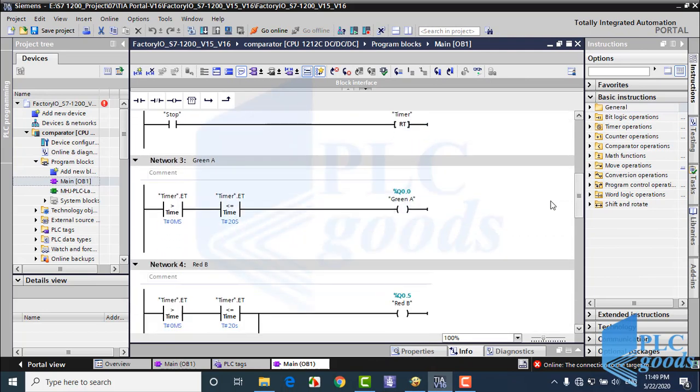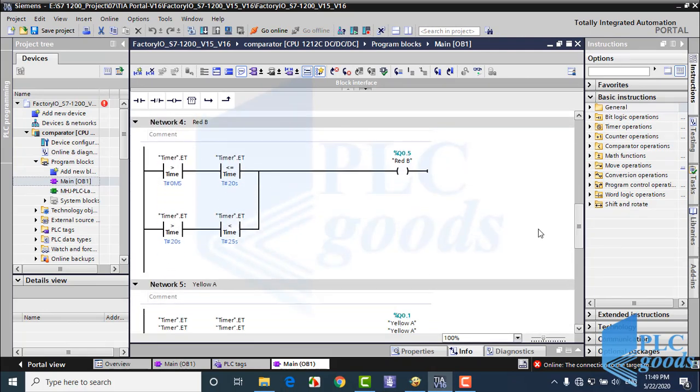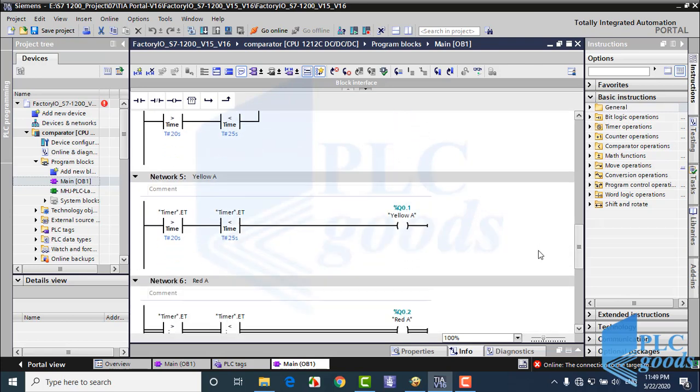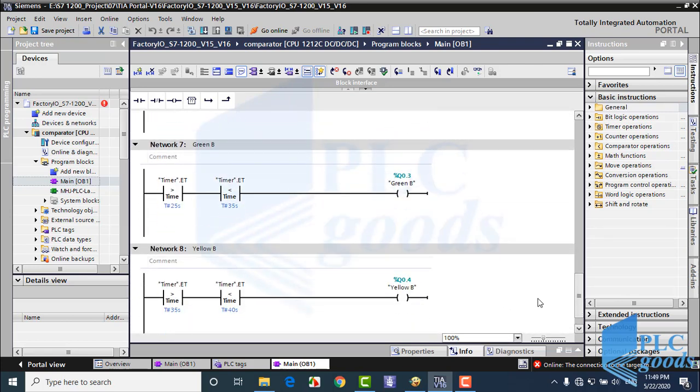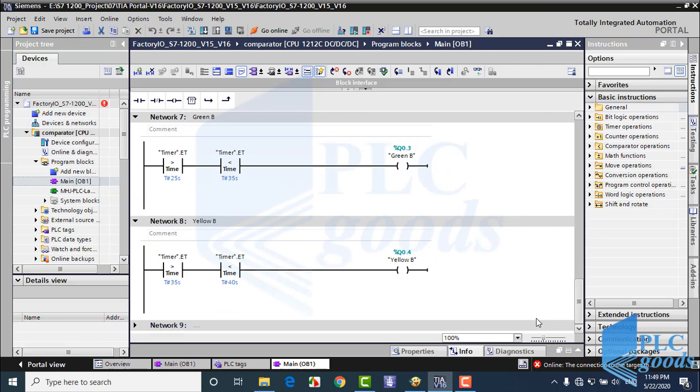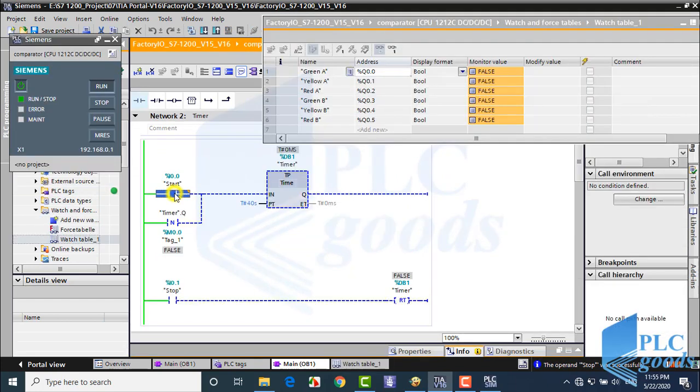Alright, this is my program based on outputs. Now let me test it with watch table. As you see, when I activate start push button, the PLC will control state of traffic lights.